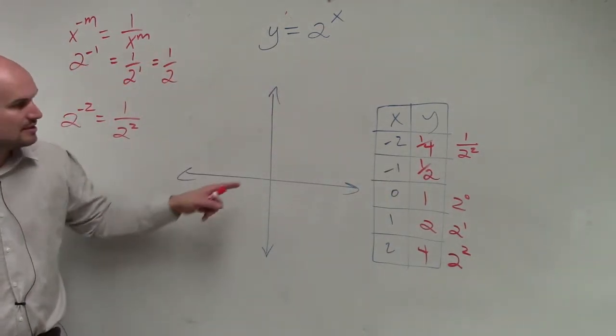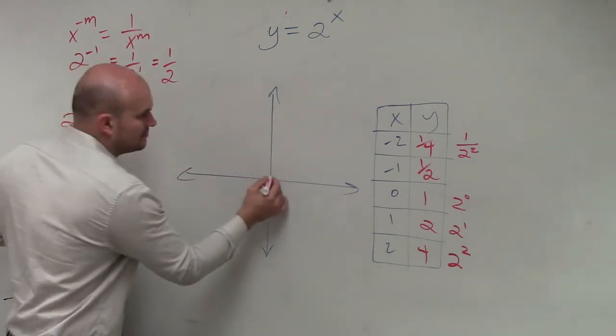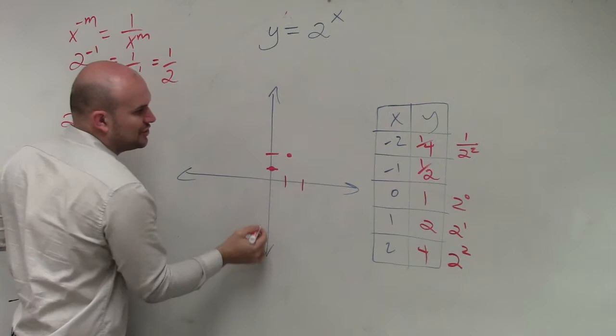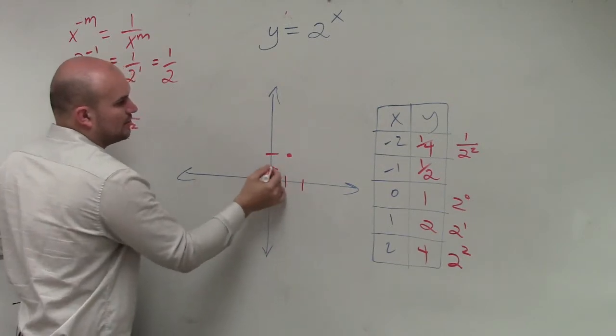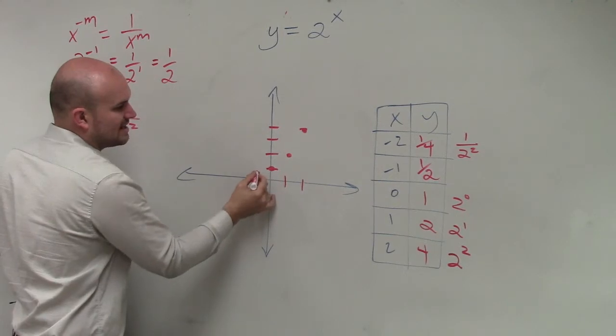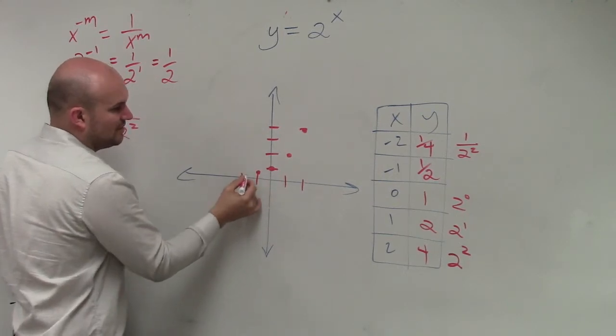So now let's plot our points. Well, we have 0, 1, which is right there, 1, 2. You have 2, 4, 1, 2, 1, 2, 1, 2, 3, 4. Then we have negative 1 is at 1 half. Negative 2 is at 1 fourth.